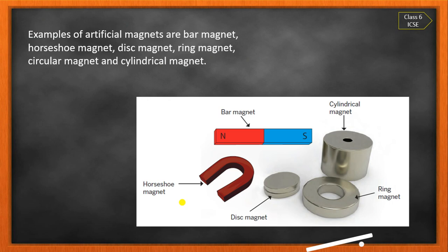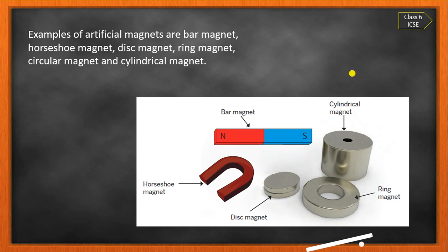Examples of artificial magnets are the bar magnet, horseshoe magnet, disk magnet, ring-shape magnet, circular magnet, and cylindrical magnet. All are examples of artificial magnets — magnets made by us using different methods.